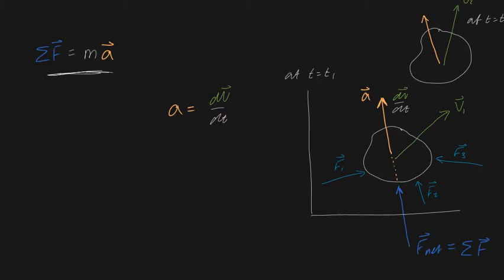So let's substitute that into our formula, and we're left with the sum of forces acting on an object is equal to your mass of your object times by dv/dt.